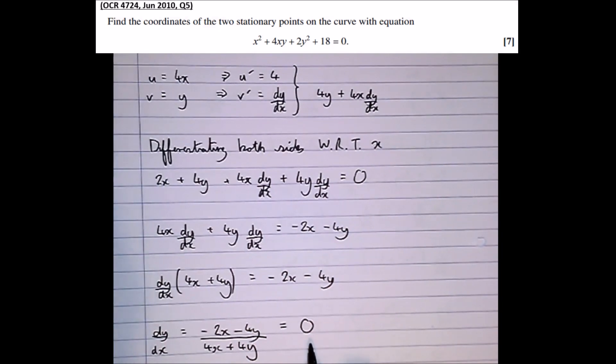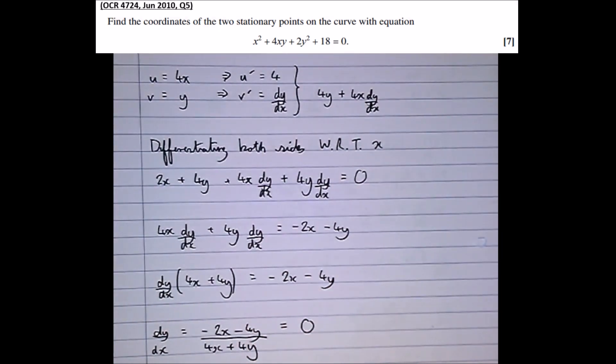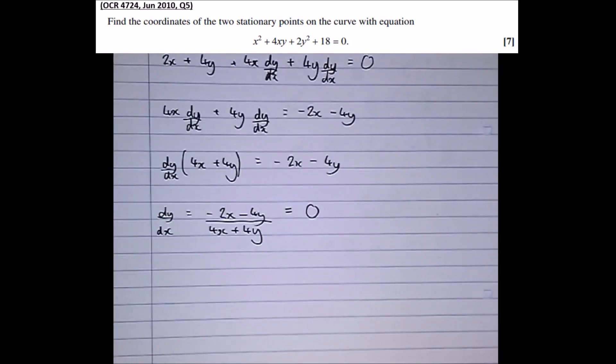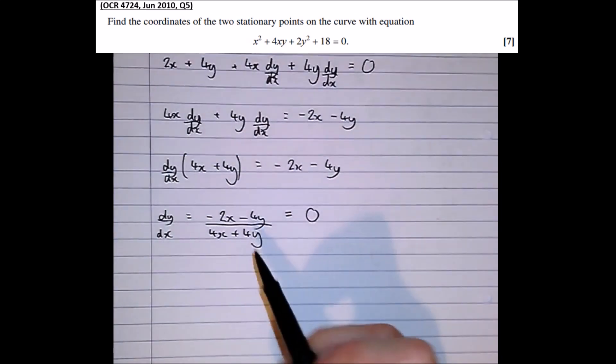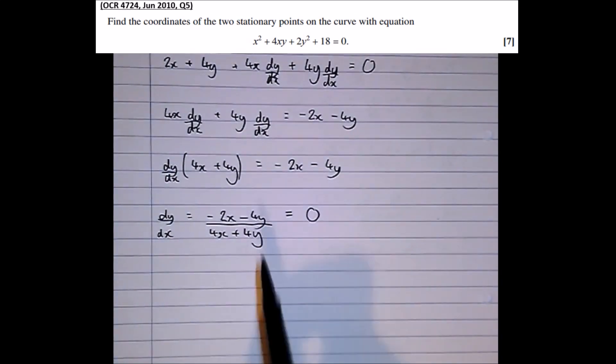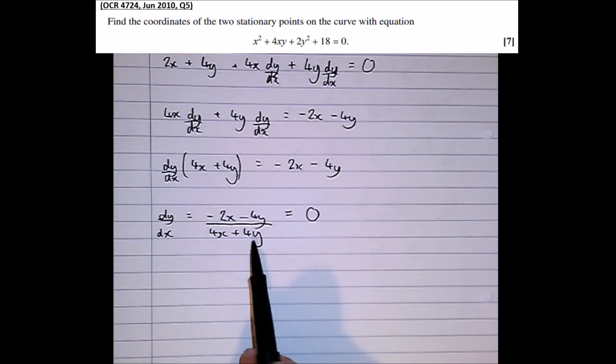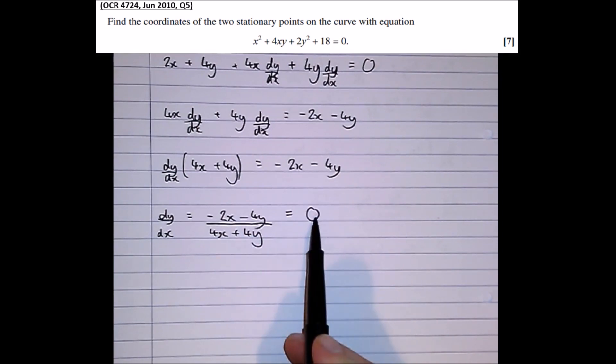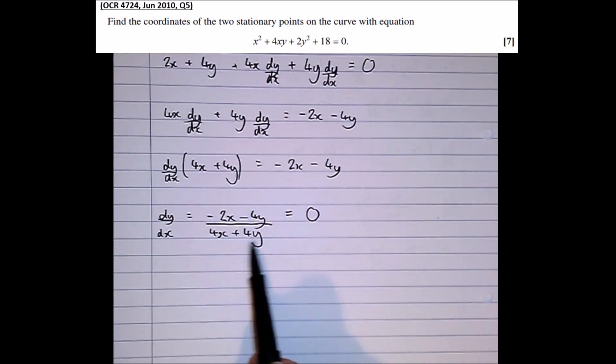And it's important that you write the equal 0 here, there's usually a mark for writing equal 0 when we talk about stationary points. So now we've got a fraction equal to 0, two ways of thinking about how we can solve this. We can either times both sides by the denominator.